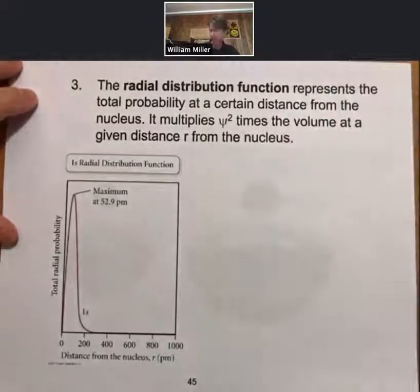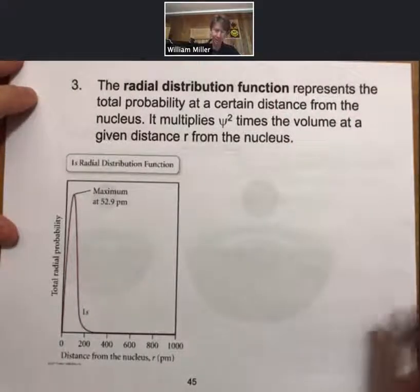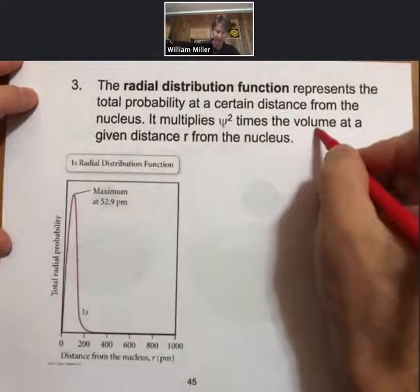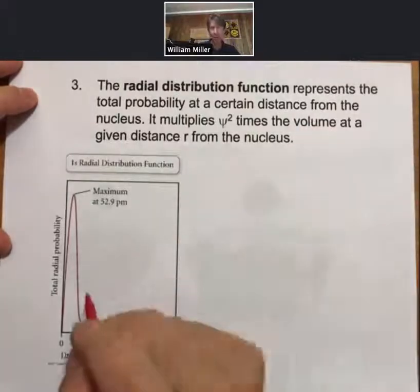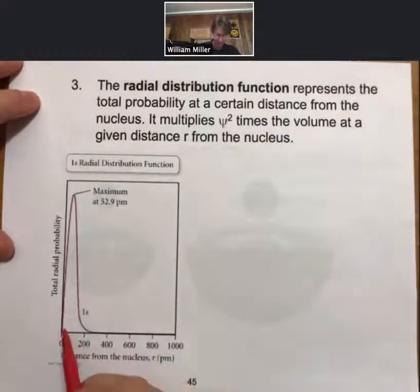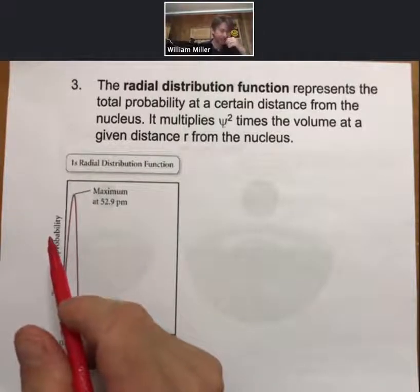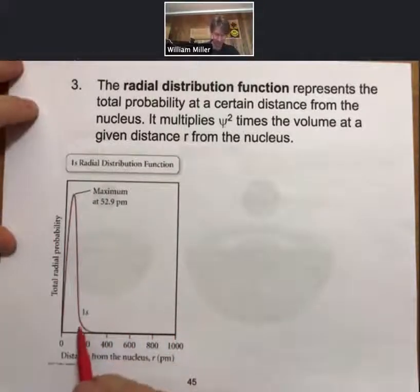Okay, so the radial distribution function represents the total probability at a certain distance from the nucleus. It multiplies psi squared, which is the probability density, times the volume. And what we find from this is that the probability.